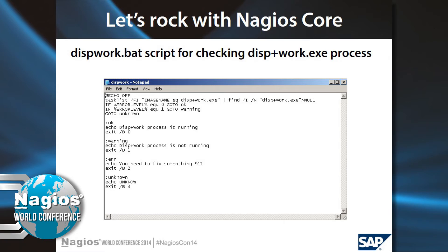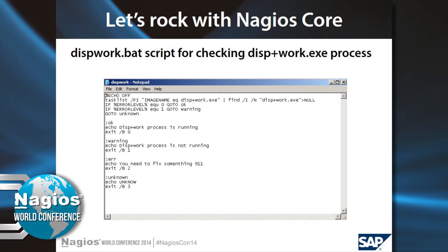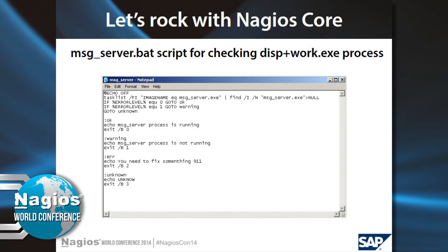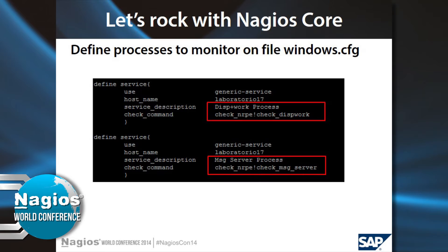Since the SAP basis doesn't want to install a plugin, I created a simple batch script to monitor the SAP work processes. That's the script for monitoring those processes. I also have a similar script for the message server. I use NRPE to call and monitor those processes — it's actually very, very simple. I define my Windows CFG file accordingly.